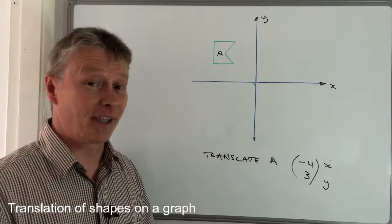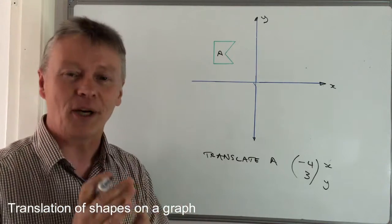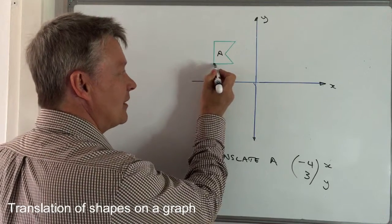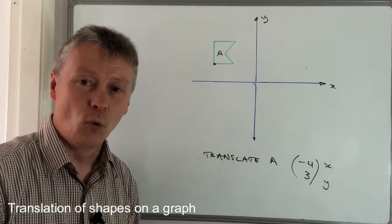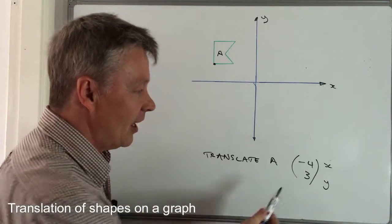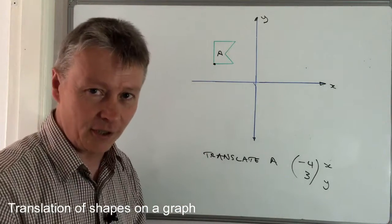The tip I'm going to give you is to always do it by points. What I mean by that is ignore the shape entirely and just choose one of the corners, one of the vertices on the shape, and then use that and make sure you get the translation correct.